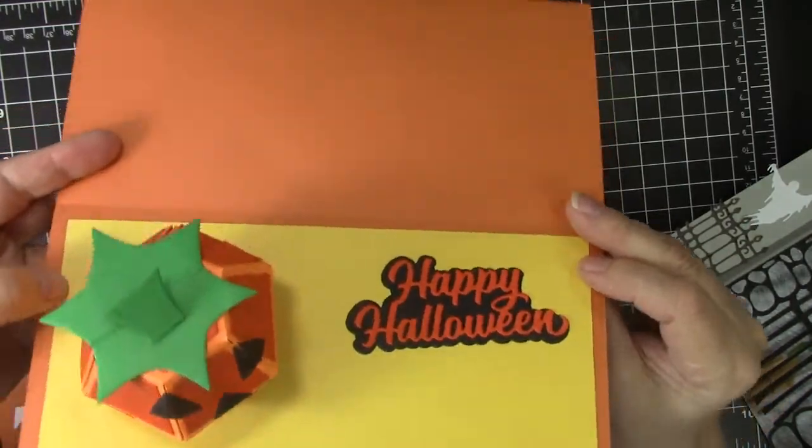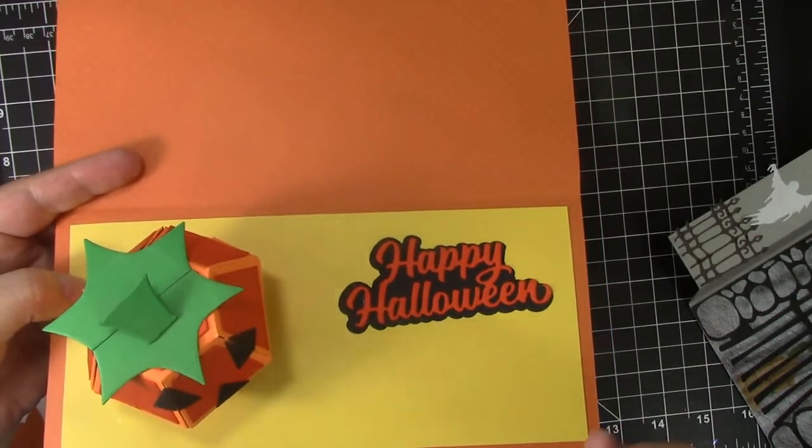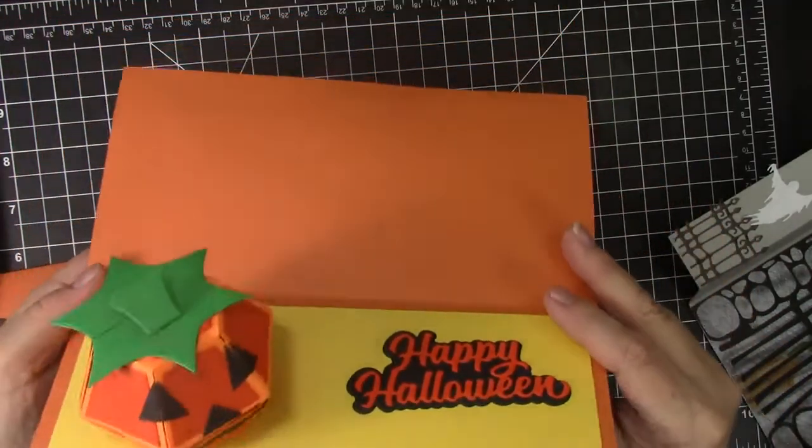But just look what happens when I slide off this belly band, a jack-o-lantern pops up. He's very, very cute. He's made with Karen Burniston's Bitty Ball, and I'm going to be using that in the card that I show you how to make. This is also a new layered die.